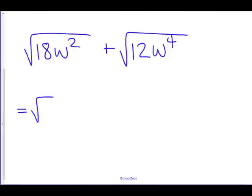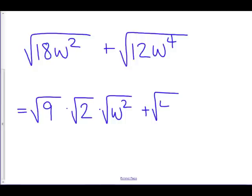Well, there is a square number as a factor of 18. It's 9, and what's left is root 2. And w squared? That's already a square, so I'll just leave that as the square root of w squared. Now, out of 12, I can take out a 4, because that is a square, and what's left is root 3. W to the 4th can be written as w squared times w squared.